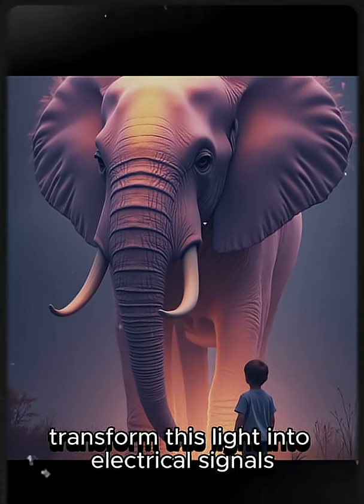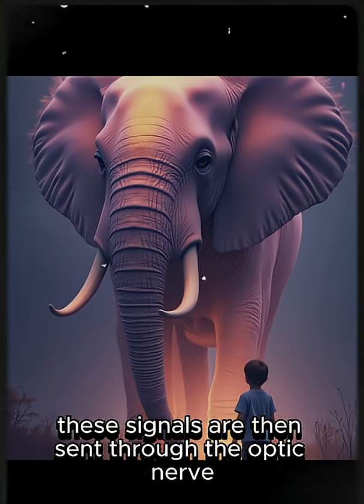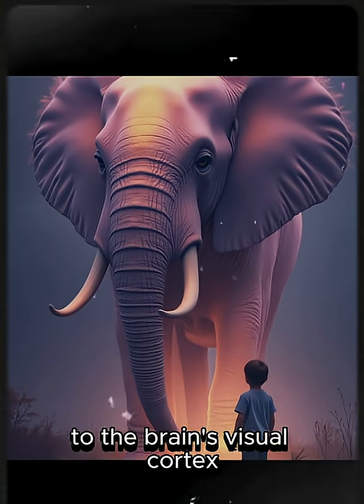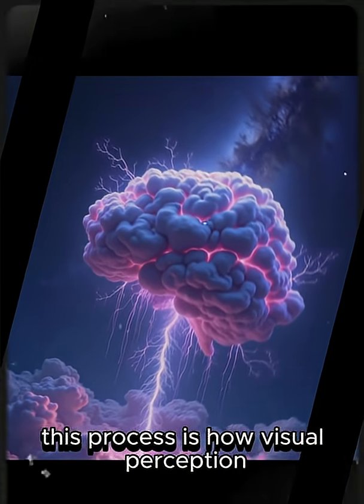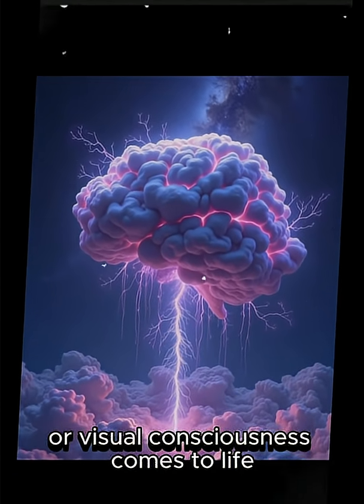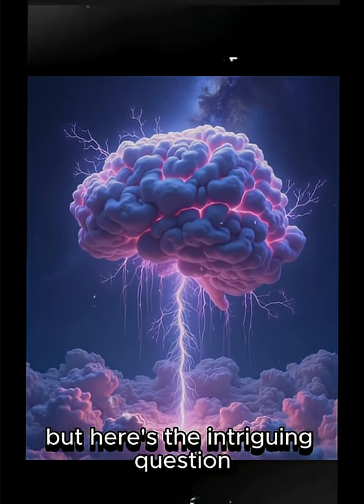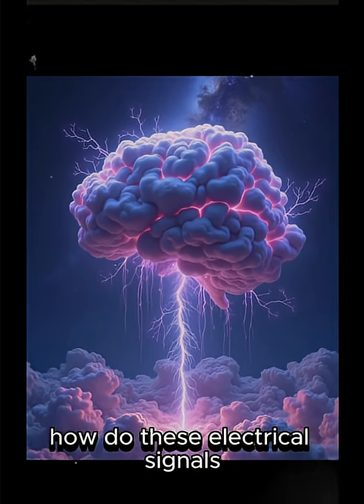These signals are then sent through the optic nerve to the brain's visual cortex. This process is how visual perception, or visual consciousness, comes to life. But here's the intriguing question: how do these electrical signals transform into vivid images in the child's mind?